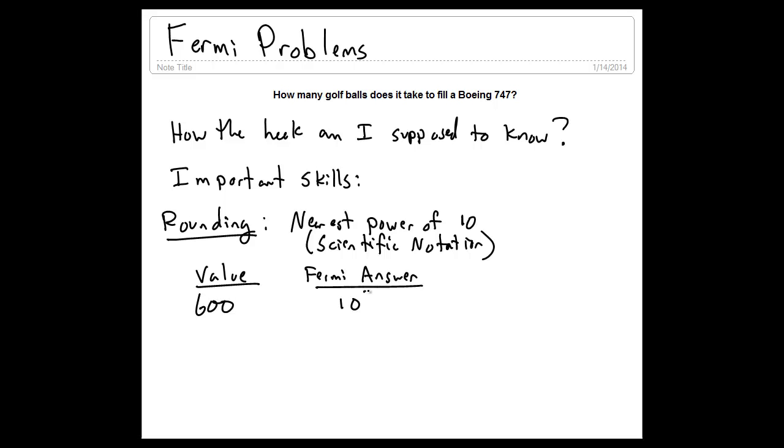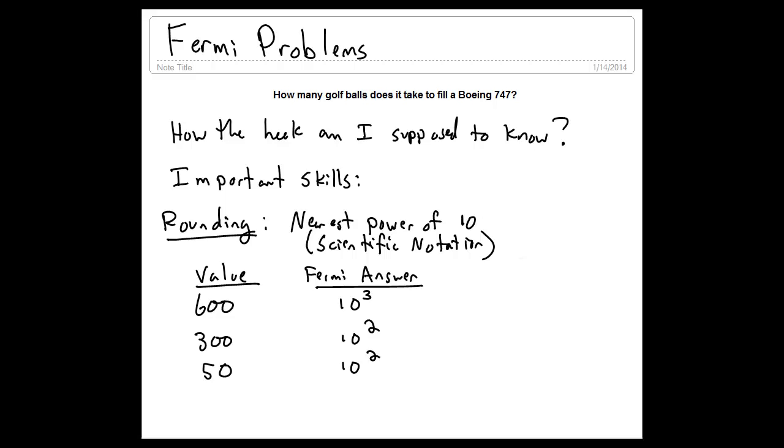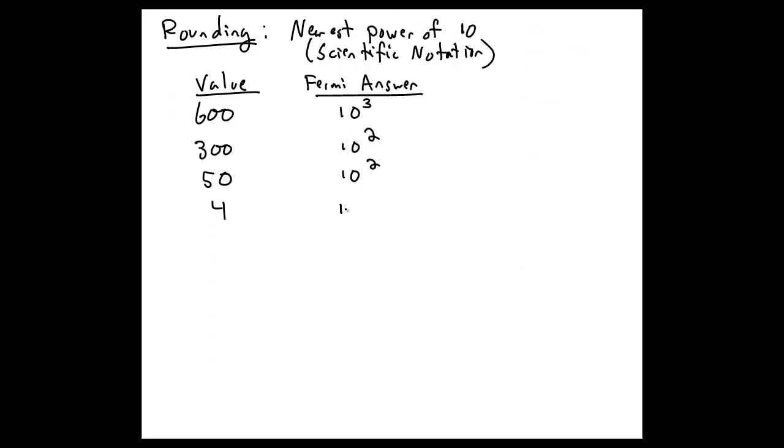So let's consider the value 600. We'd write that as 10 to the 3. 300 we'd write as 10 to the 2, and 50 we'd write as 10 to the 2 as well. 4 we'd write as 10 to the 0, 0.3 as 10 to the minus 1, and 0.5 as 10 to the minus 0. So you can see we're rounding to the nearest power of 10 on all of these.